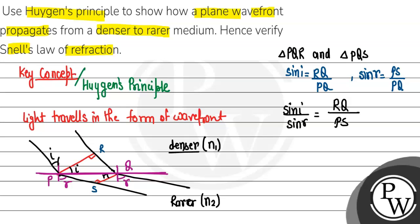Suppose in the first medium, the denser medium, the velocity was v1. In time t, the distance covered will be v1 times t, which equals RQ.